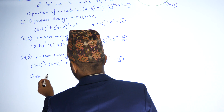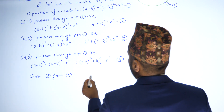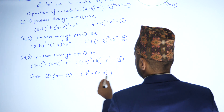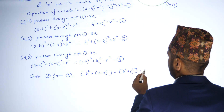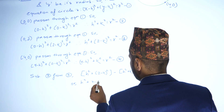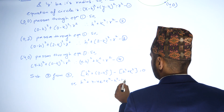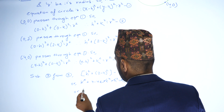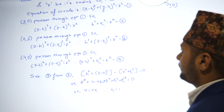Subtracting equation 2 from equation 3: h squared plus (2 minus k) squared minus h squared minus k squared equals 0. Expanding: h squared plus 4 minus 4k plus k squared minus h squared minus k squared equals 0. Simplifying, 4 minus 4k equals 0, therefore k equals 1.